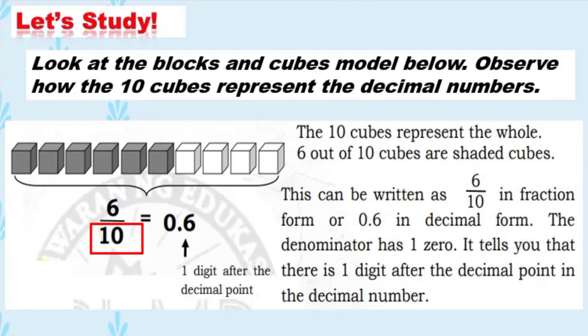Ang kabuuan bilang na 10, o ang denominator na 10, ay may iisang zero, kaya ang decimal number ay isang digit lang from the decimal point.